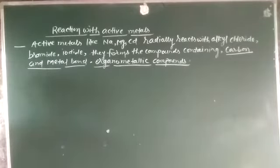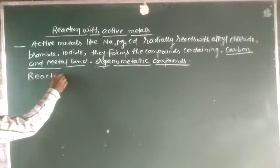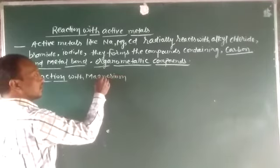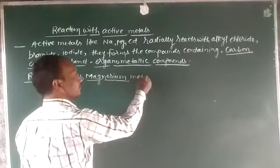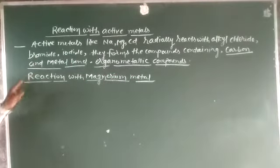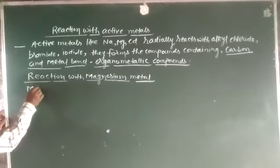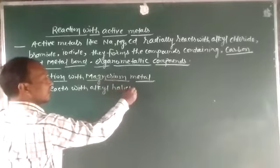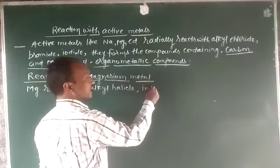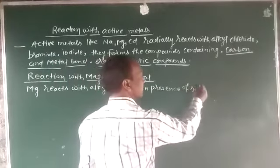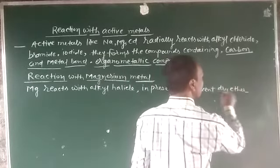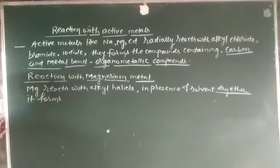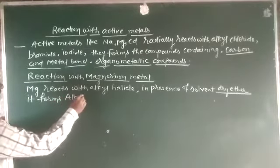Now we will see the next point: reaction with magnesium metal. Magnesium, a special active metal, reacts with alkyl halides in the presence of dry ether as a solvent, forming alkyl magnesium halide.